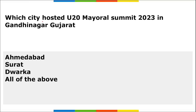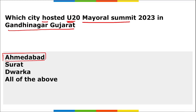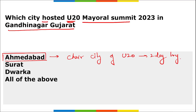Which city hosted the U20 Mural Summit 2023? It was held in Gandhinagar, Gujarat. Ahmedabad was the chair city of U20. It was a two-day summit held on 7th and 8th of July, and it concluded with the handover of the communiqué from the mayors to G20 leaders.